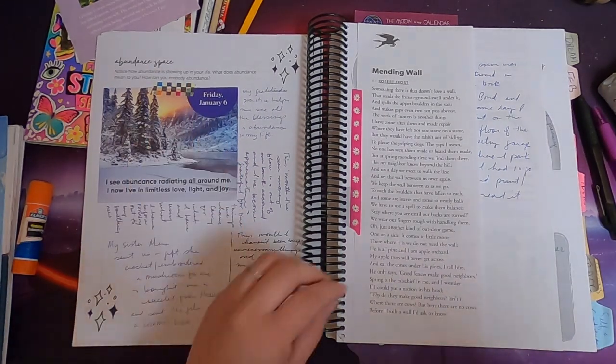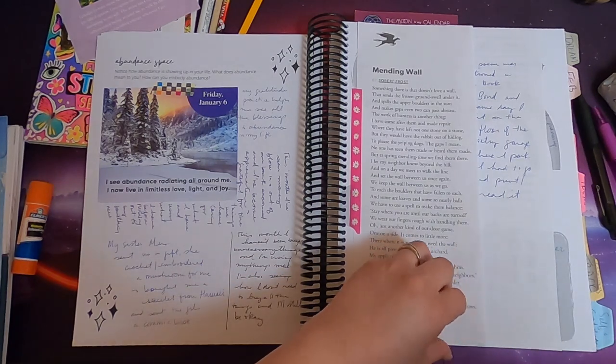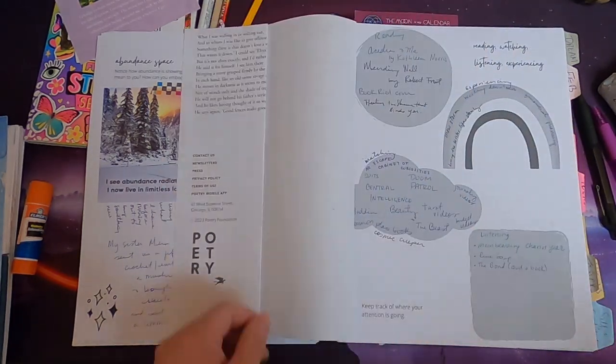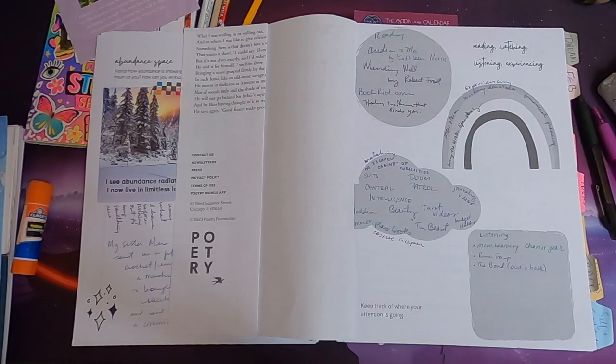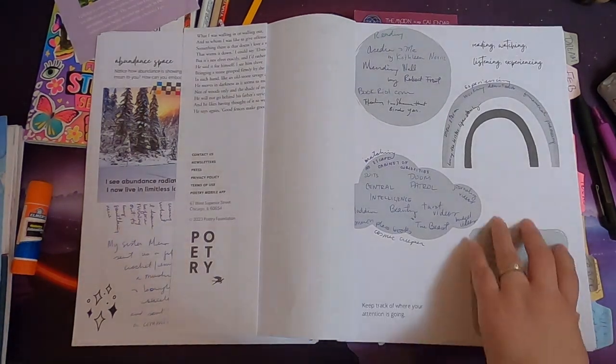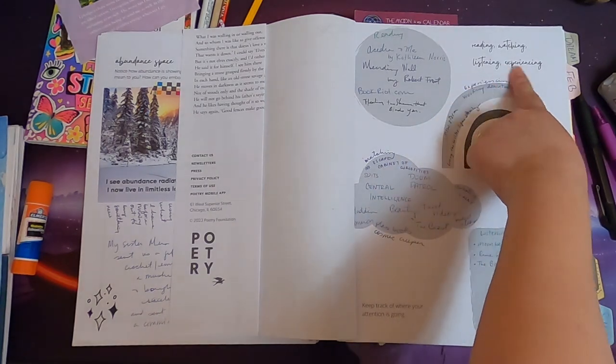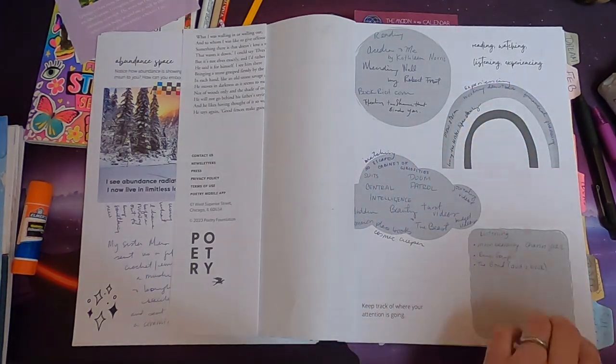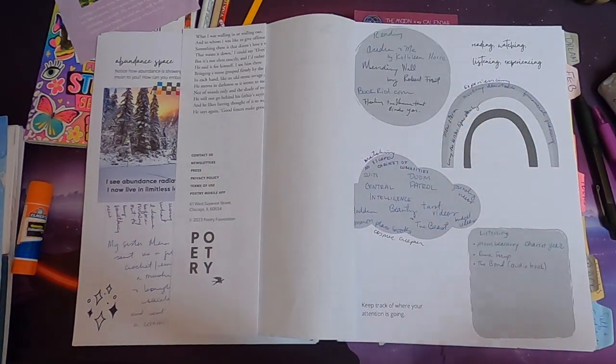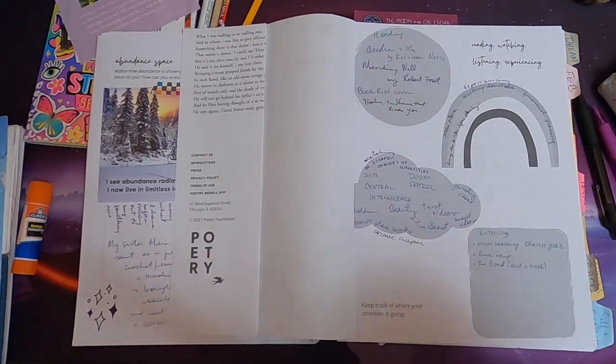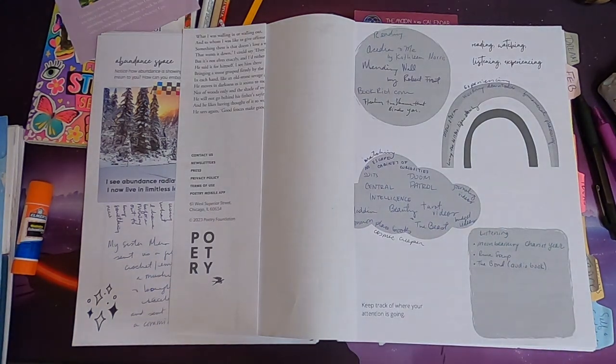Then there's a space to write the ways that abundance is showing up in your life and here I have a page where I keep track of the different things that I'm reading, watching, listening, and experiencing. So I'll write down like podcasts, videos, shows, movies, all that stuff.